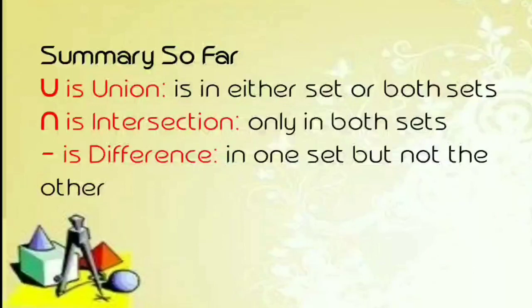Summary so far: Big U is union — is in either set or both sets. Reverse U is intersection — only in both sets. Dash is difference — in one set but not the other. Ang capital U ay union o pagsasama. Ang baliktad na U naman ay intersection — ito ay yung mga nasa parehas na set. Dash is difference — nasa isang set pero hindi kasama sa iba o sa gitna.